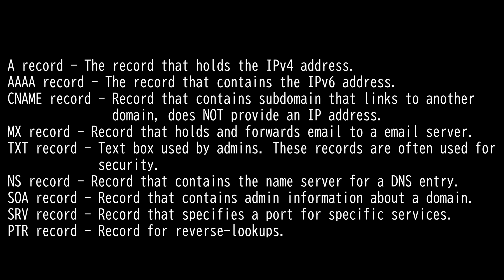Then we have the Mail Exchange record — MX. This record directs email to a mail server and indicates how email messages should be routed in accordance with Simple Mail Transfer Protocol. Just like CNAME records, MX records must always point to another domain. Message Transfer Agent (MTA) software is responsible for querying MX records. When a user sends an email, the MTA sends a DNS query to identify the mail servers for the email recipients, then the MTA establishes an SMTP connection with those mail servers.